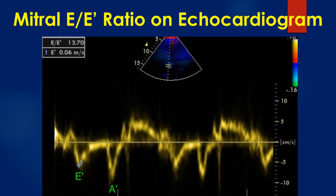The software usually gives the E by E prime ratio automatically. In this case, the ratio is given as 13.7.